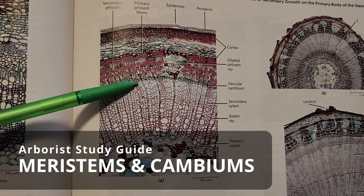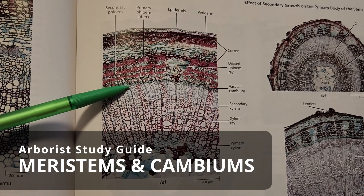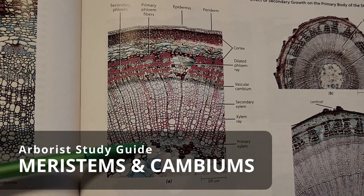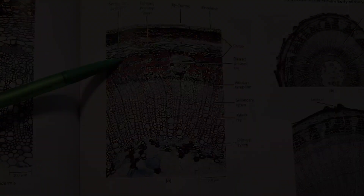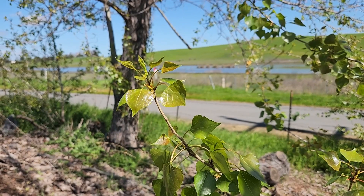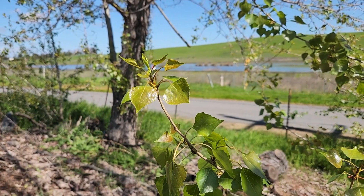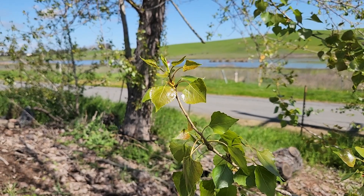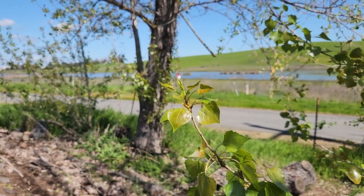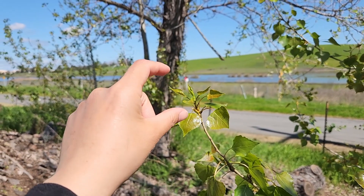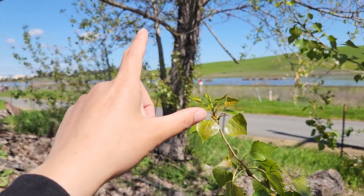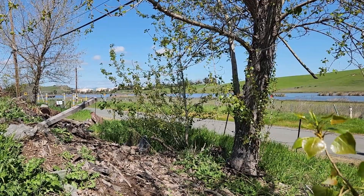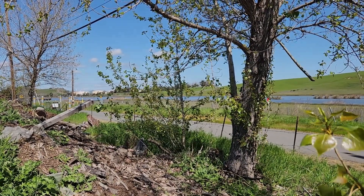This video is going to cover meristems and cambiums, both of which are tissue types that are responsible for incremental plant growth. Plants are constantly replacing parts and extending themselves. Since they can't move from where they're growing, this is a way for them to expand into more of the airspace as well as explore more of the soil to take advantage of the resources.